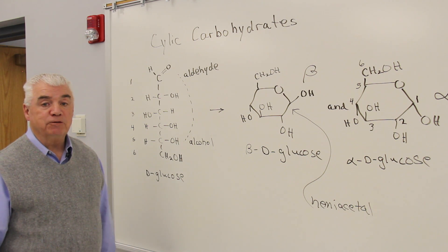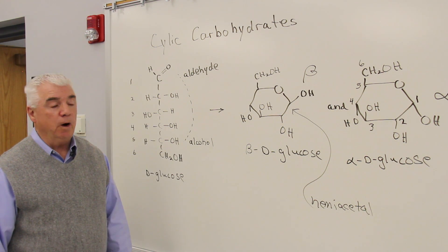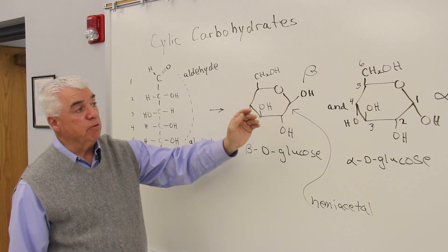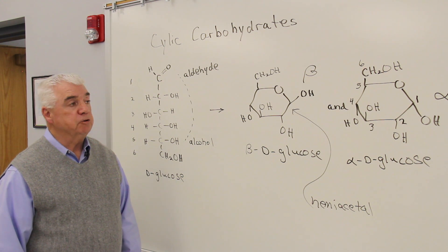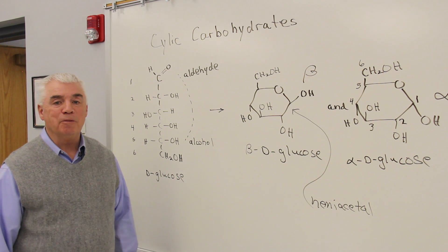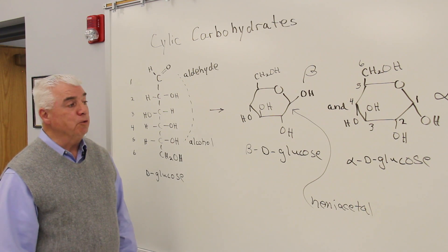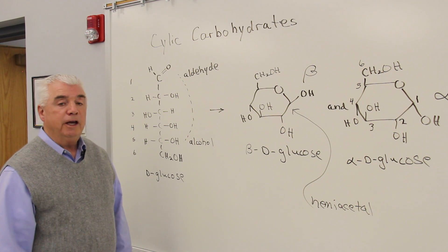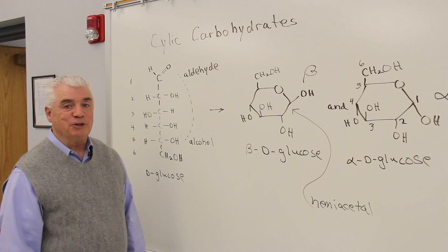Another one of the learning objectives for the carbohydrate chapter is to be able to describe the cyclic structures. Here I've got a monosaccharide, but you'll also want to be able to describe the structures of the disaccharides and the polysaccharides. We don't expect you to memorize these structures, but we'd like you to be able to describe them in terms of what units make them up and what kind of linkages they have.